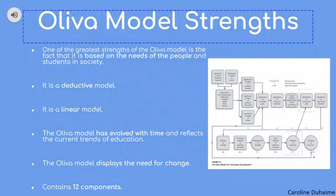The Oliva model is based on the needs of the people and the students in society. Oliva recognized that not all people in society have the same needs — different demographics in different cities and towns do not necessarily share the same needs. The model is also deductive, which is a strength because you must attain knowledge before you can develop a deeper understanding of a topic. The model is linear, which is a strength because, like most things in life, we progress in sequential order, building upon previously acquired knowledge. It is important to note that the Oliva model has evolved with time, reflecting current trends in education and the need for change as we acquire new knowledge.